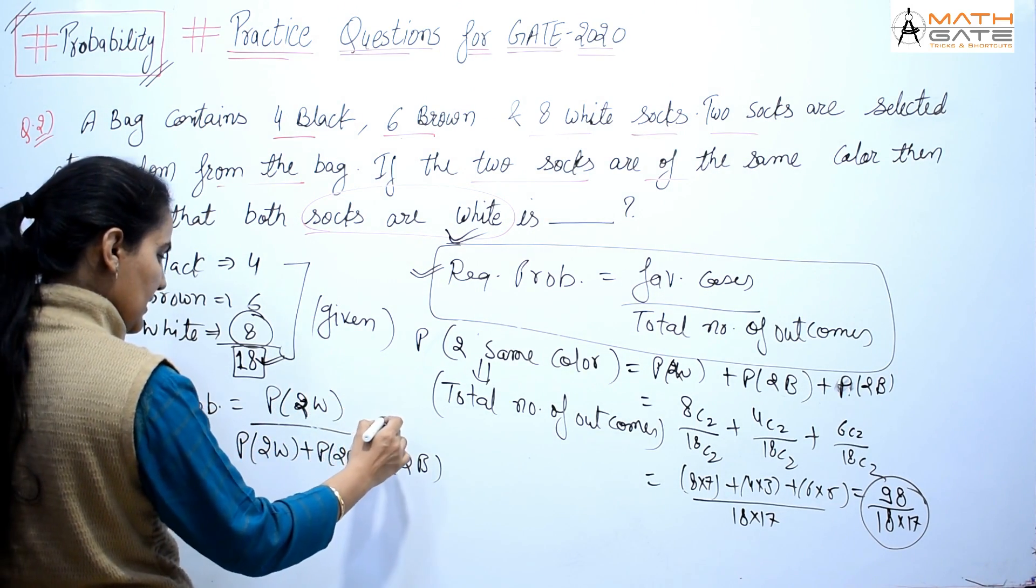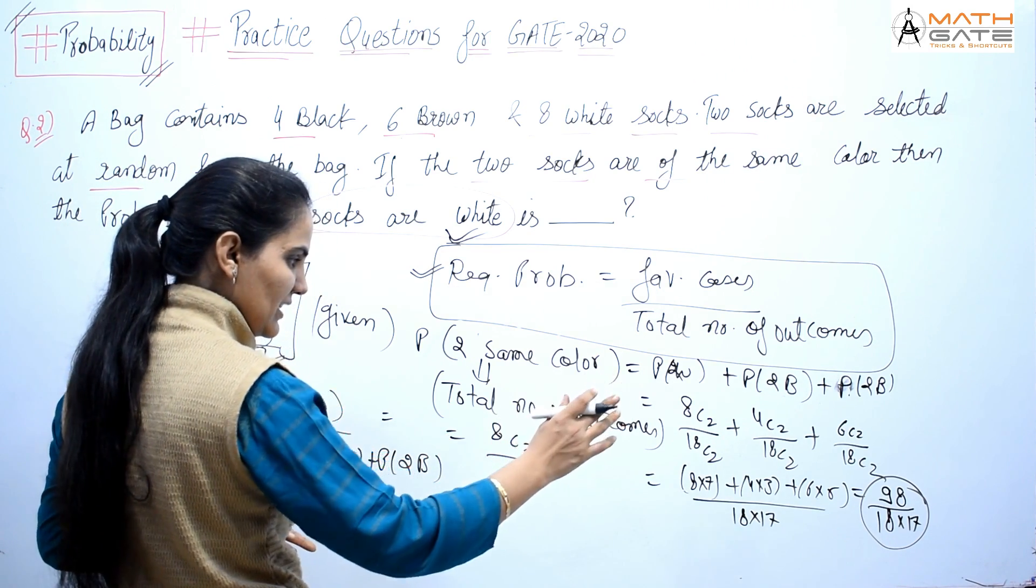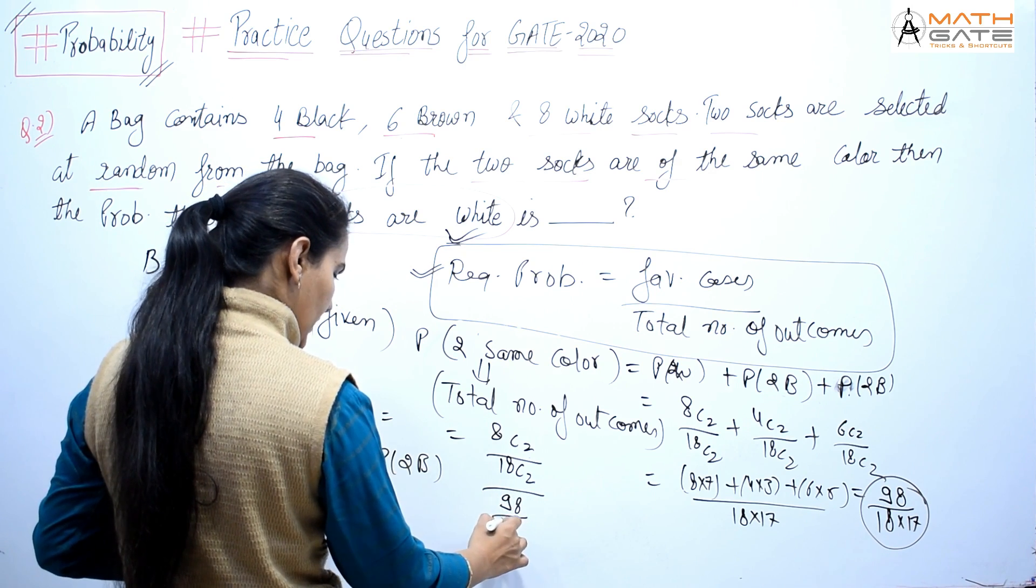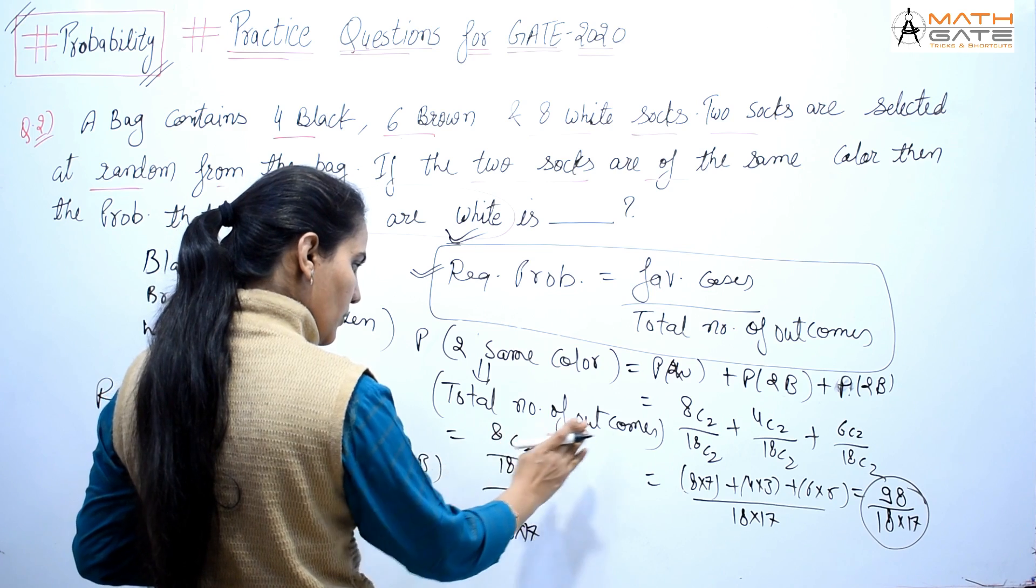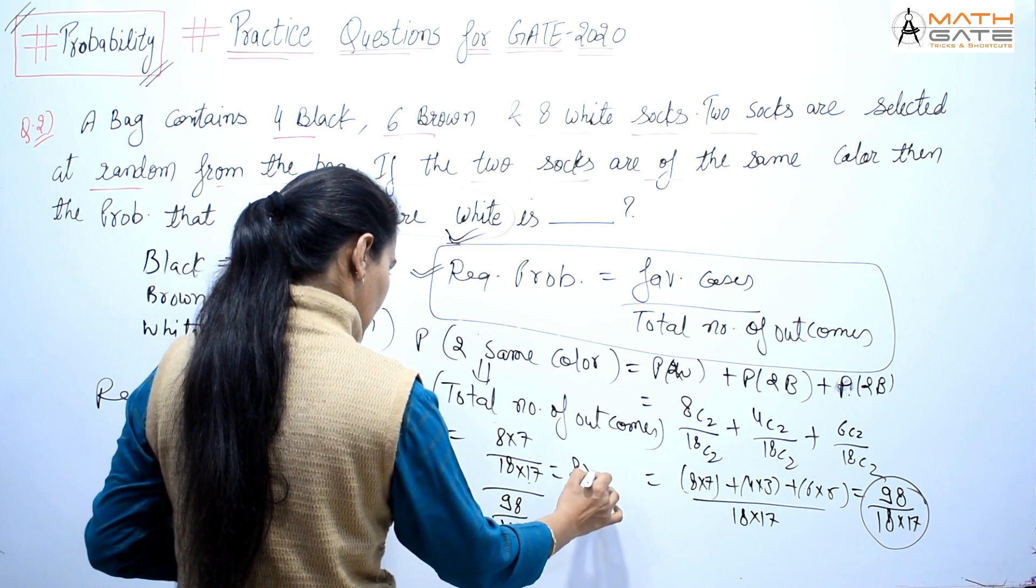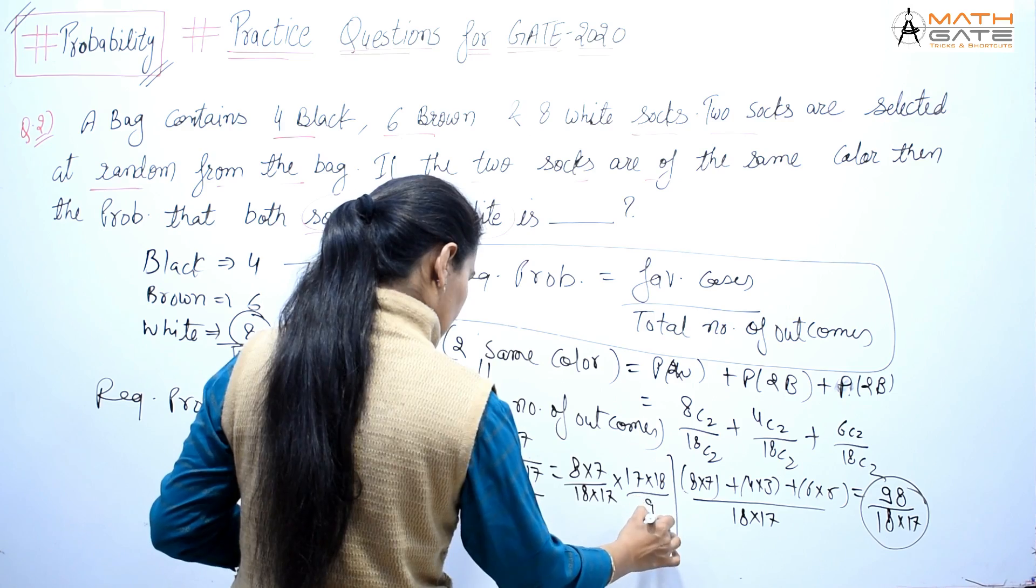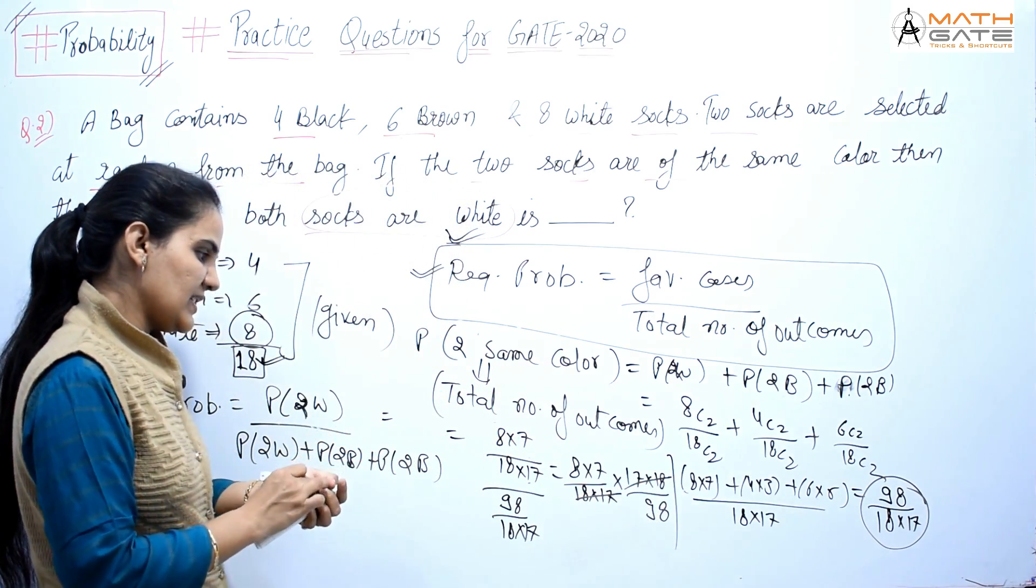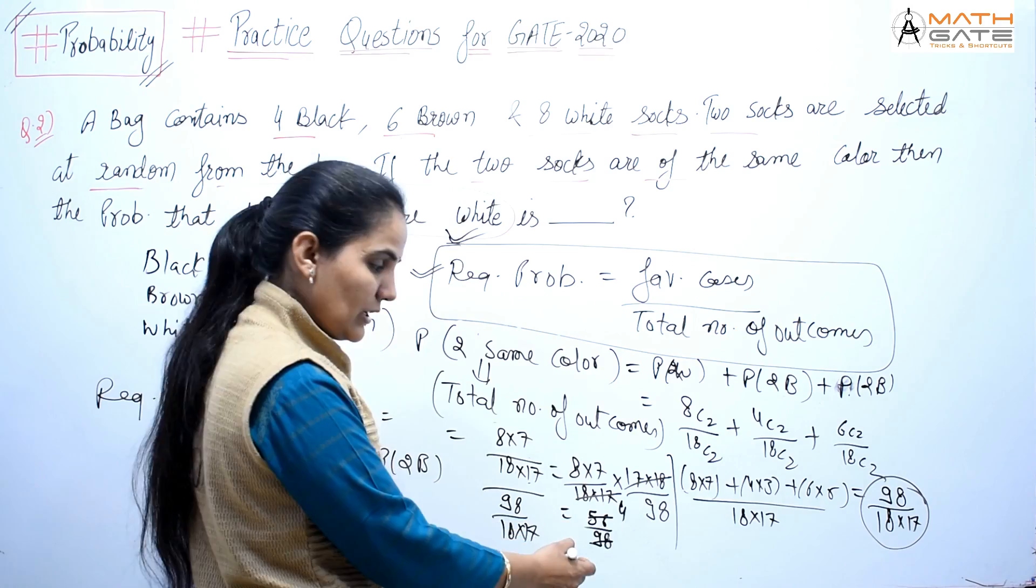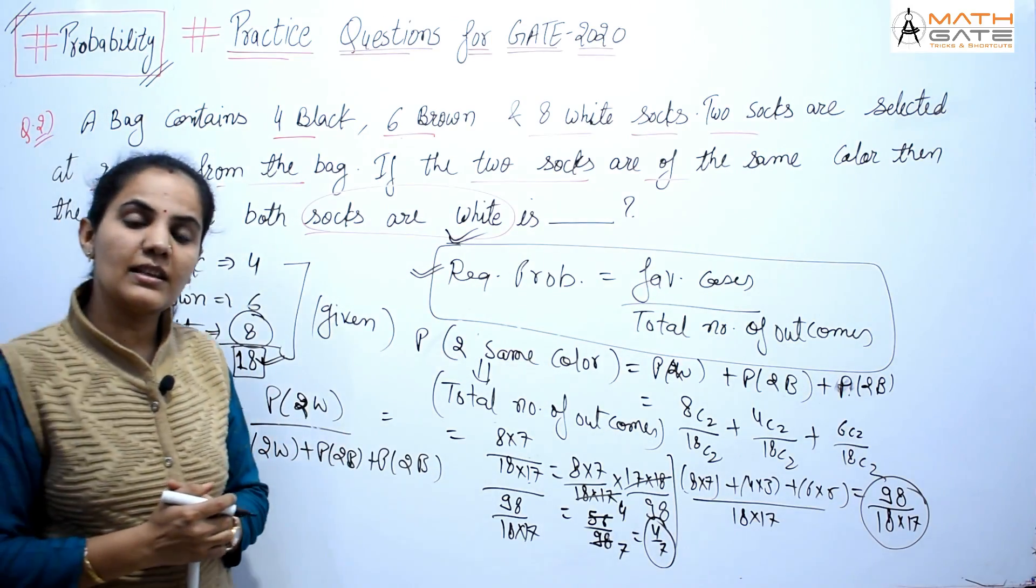So two white probability, what will it be? We already have it. We can write the value. So it becomes 8C2, the rest 18C2 will remain. So 8C2 by 18C2 by 98 by 18 into 17. 8C2, if you want to write it completely: 8 into 7 by 2 into 1 by 18 into 17 by 18 into 17. We can write it like this: 18 into 17 by 98. These two cancel. Now what do you have left? 8 into 7 by 98. When you solve this: 56 by 98. 14 cancels: 14, 4 and 14, 7. Then the answer will come: 4 by 7. So this question's answer is 4 by 7, right?